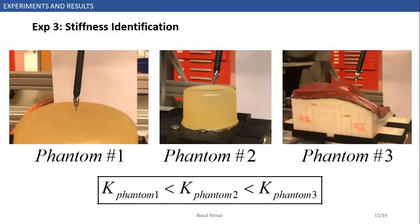This is our last experiment, which is stiffness identification. In this experiment, we performed the palpation case study. Here, our purpose is to demonstrate the feasibility of the method for clinical purposes by differentiating the relative stiffness values of three different phantom objects. The third object has the highest stiffness, whereas the first object has the lowest stiffness. We tried to obtain this relationship as a result of this experiment using our method.